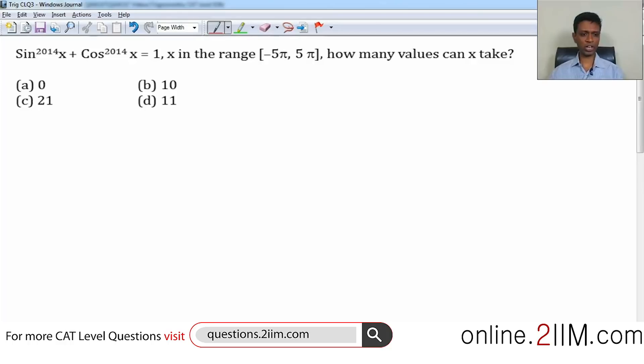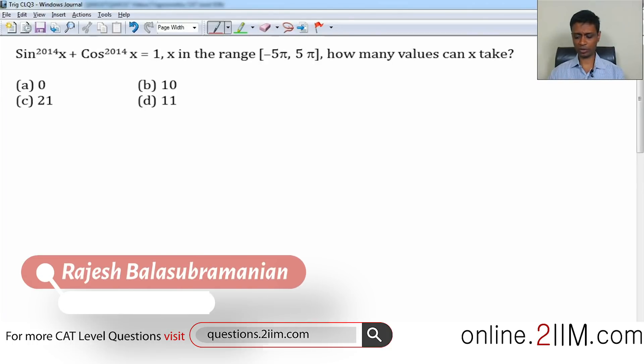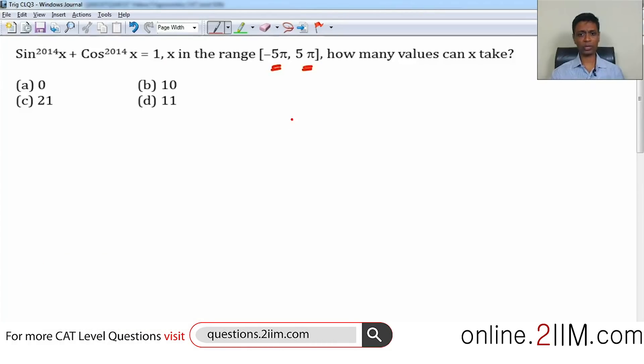Let us do this one. This is on trigonometry, again a wonderful question. I am going to elaborate on this after we go through the question. sin^2014(x) plus cos^2014(x) equals 1, x lies in the range of minus 5π to plus 5π. How many values can x take? Remember it includes minus 5π and plus 5π.